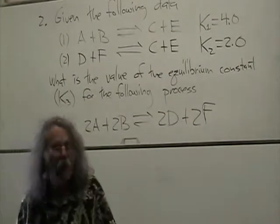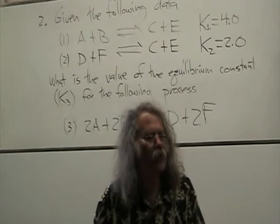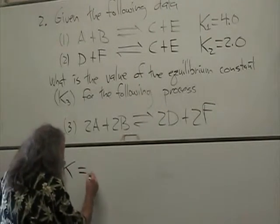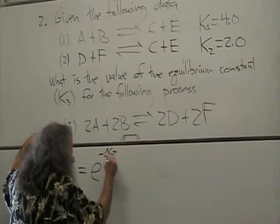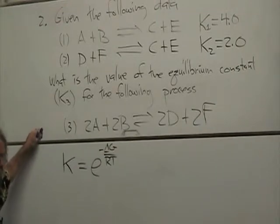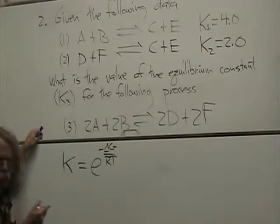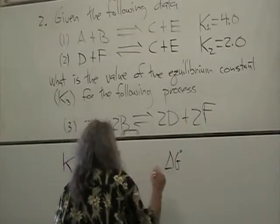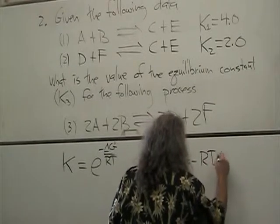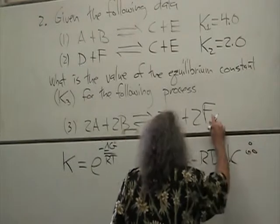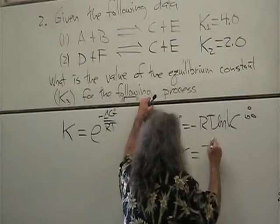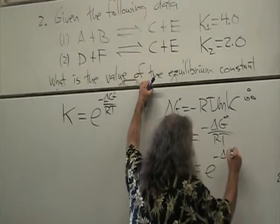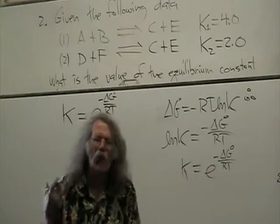So this would be a scratch paper thing, but in case you forget, this is what I'd like you to do. Since K is equal to e to the minus delta G over RT, right? And remember, how did I get that? We can derive that. Remember, delta G equals negative RT natural log of K. Delta G naught equals minus RT natural log of K. Therefore, natural log of K equals minus delta G naught over RT. And K is equal to e to the minus delta G naught over RT.